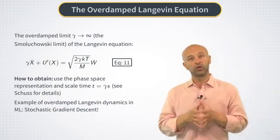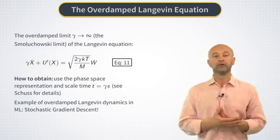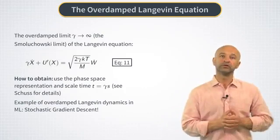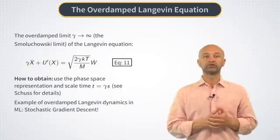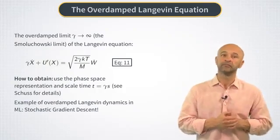Just think of x as a model parameter and of u of x as a loss function that you want to minimize. The role of Brownian noise in the Langevin equation will be played by the observational noise in a mini-batch procedure of the stochastic gradient descent method.